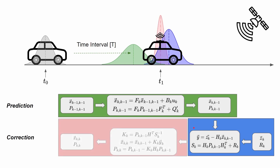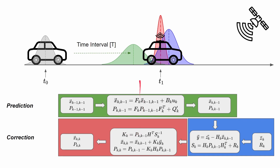The next step is to do the actual state vector update and the state covariance update. For this we have three equations. The first is called the Kalman gain — the K matrix. The Kalman gain is basically a weighting or ratio between the predicted covariance from the prediction step and the S covariance, the residual covariance which we calculated in the previous step.